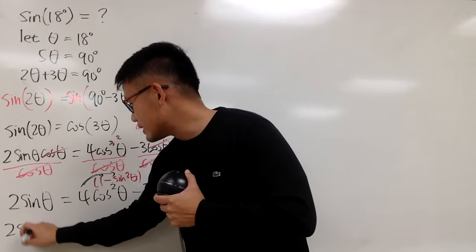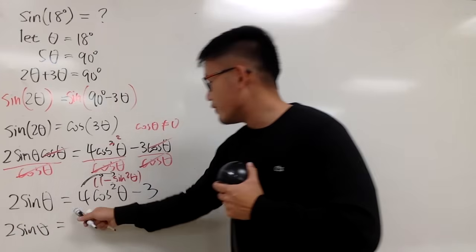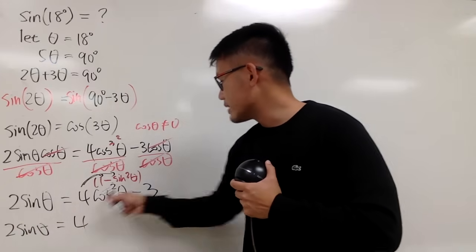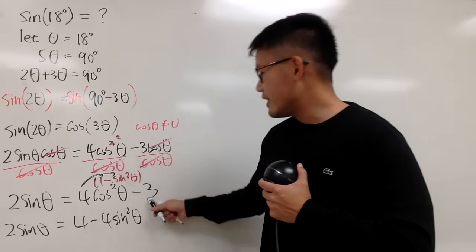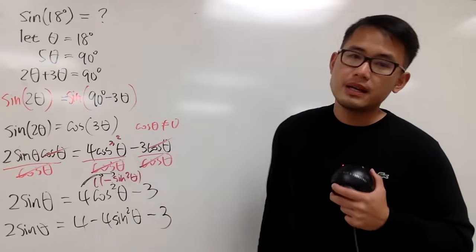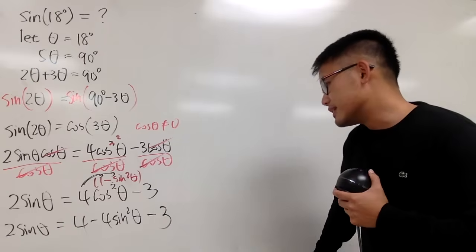On the left-hand side, we have 2 sine theta. 4 times 1 is 4, and then this times this is minus 4 sine squared theta, and then minus 3. So far, so good, isn't it?